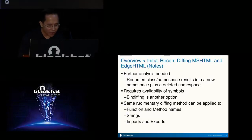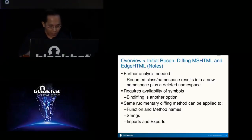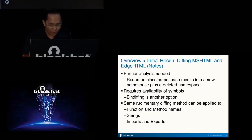Of course, the method has its caveats. First, the results are suggestions — further analysis is needed because a class or namespace might have been renamed rather than removed or added. Additionally, the method requires the availability of symbols. Finally, this simple diffing method can also be used to diff function and method names to identify changes in functionality of classes, or strings — new strings may give you clues about new functionalities. And also imports and exports: new imports suggest new libraries being used, and exports suggest new functionalities exposed by the binary.